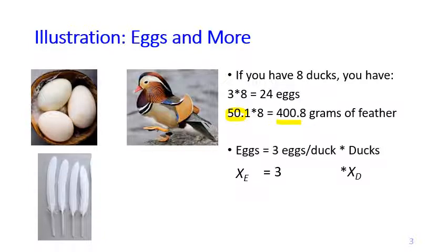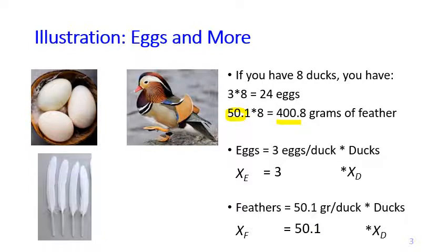If we write it down in terms of variables like before, you see that x_e equals 3 times x_d, which we have seen before. Now x_f for feathers equals 50.1 times x_d. So you see that here the variable is the same, x_d.